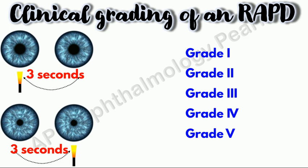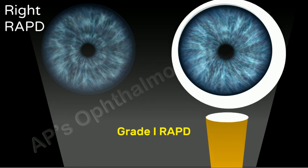Since the RAPD is seen when light is swung from the normal to the affected eye, in the examples for each clinical grade, the right eye will be taken to be the abnormal eye and the effect of the swing from the left eye to the right eye alone will be demonstrated.